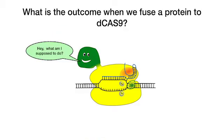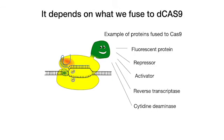In each version of fusion, a different protein type is used. The outcome depends on what we fuse to D-Cas9. For example: a fluorescent protein, a transcriptional repressor, an activator, a reverse transcriptase, or cytidine deaminase. These different fusions have specialized applications.